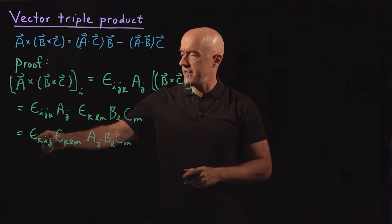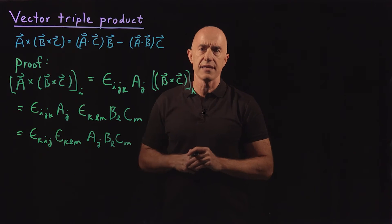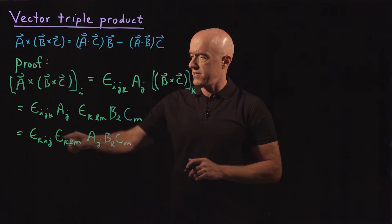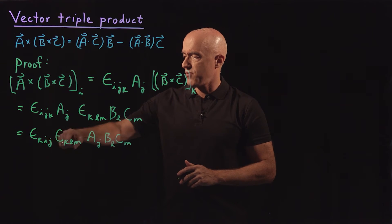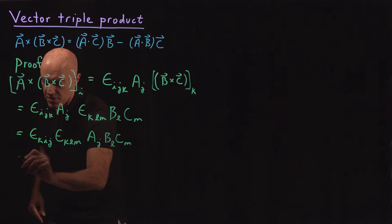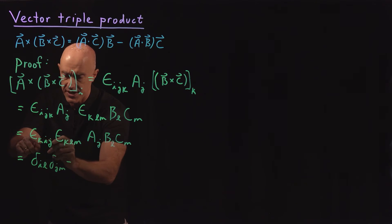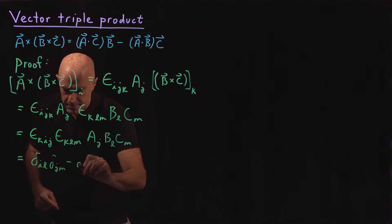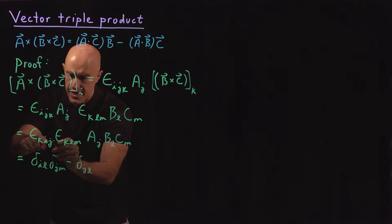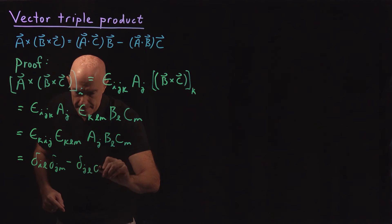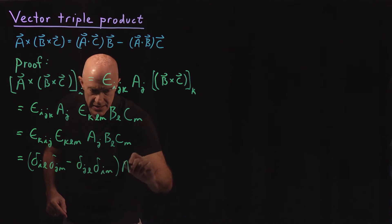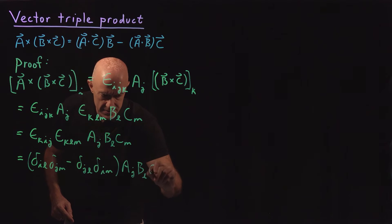Now we use the identity that if we're summing over one index of a product of Levi-Civita symbols, then we can write that as the product of Kronecker deltas. So the product here would be delta_{i,l} delta_{j,m} minus delta_{j,l} delta_{i,m} times A_j, B_l, C_m.